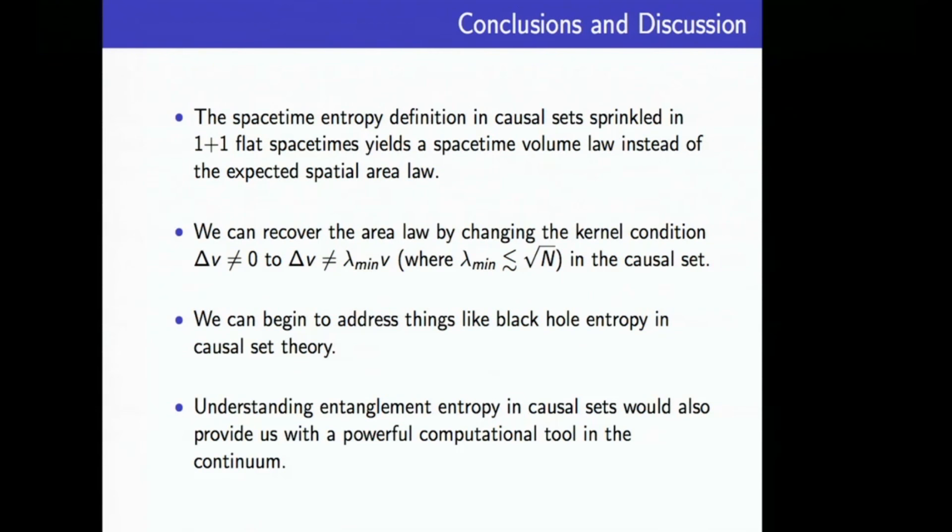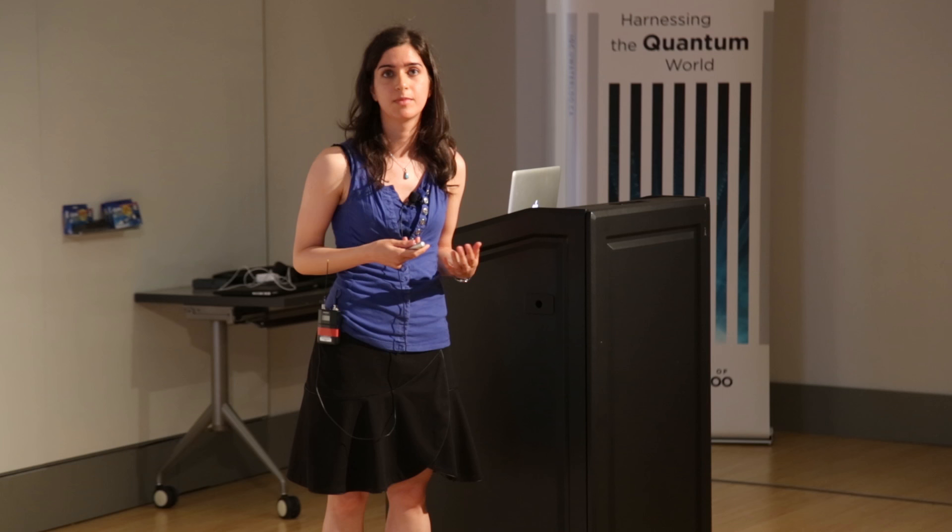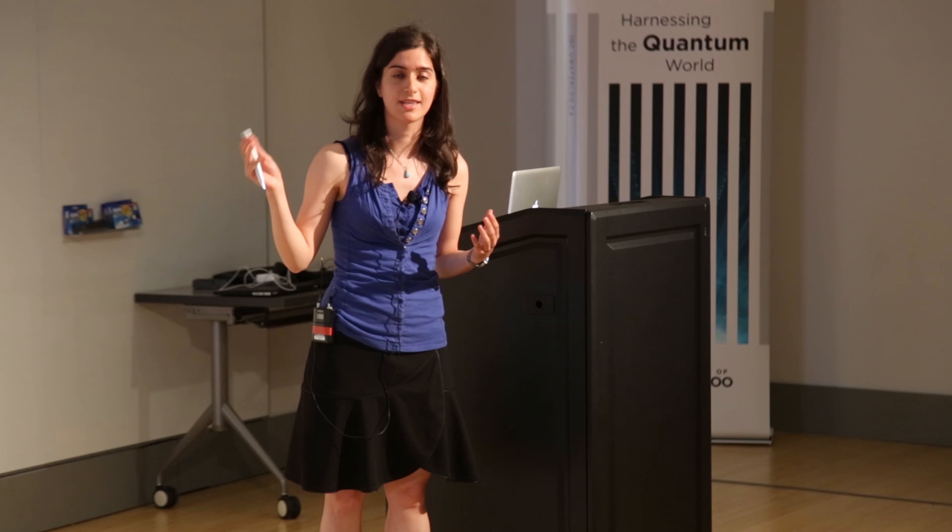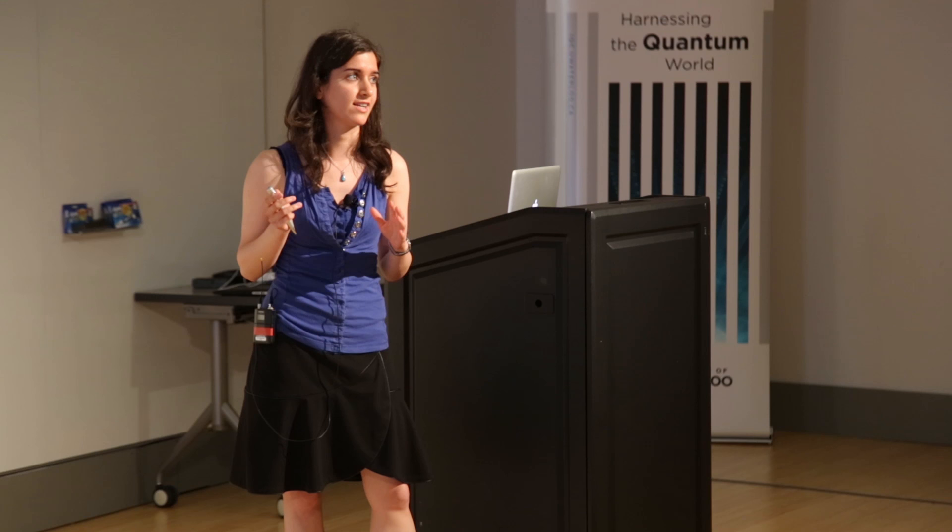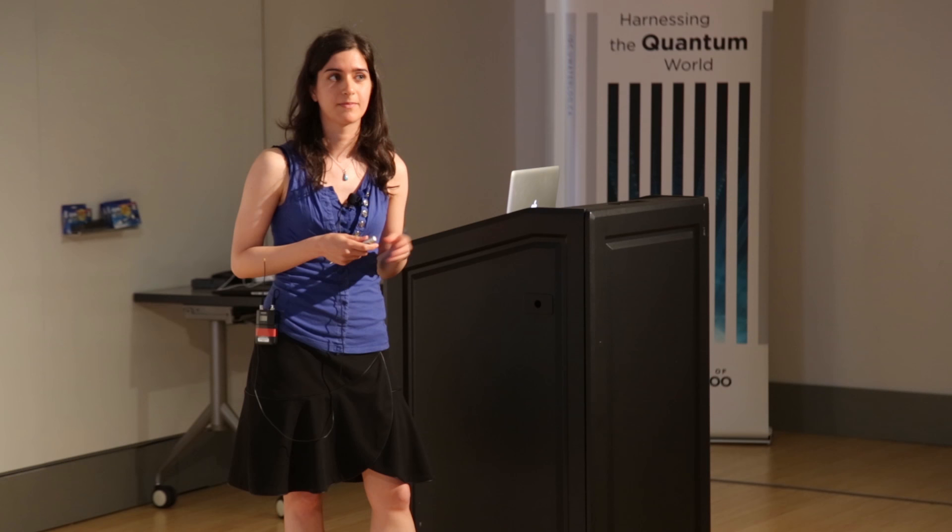We can begin to think about things like black hole entropy, which is conjectured to be mostly or all entanglement entropy. It can also be important for continuum calculations if we view this formalism as a tool to do calculations in the continuum, because these kinds of entanglement entropy calculations in CFTs are actually very difficult to do. In the causal set, they're very easy to do, it's very easy matrix algebra, so it could potentially be a powerful tool for people who are more interested in the continuum. Thank you.